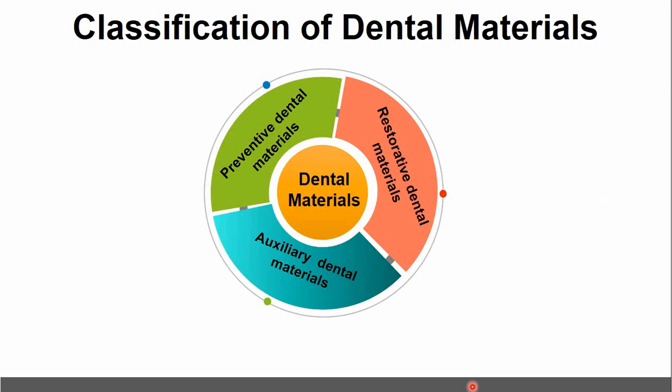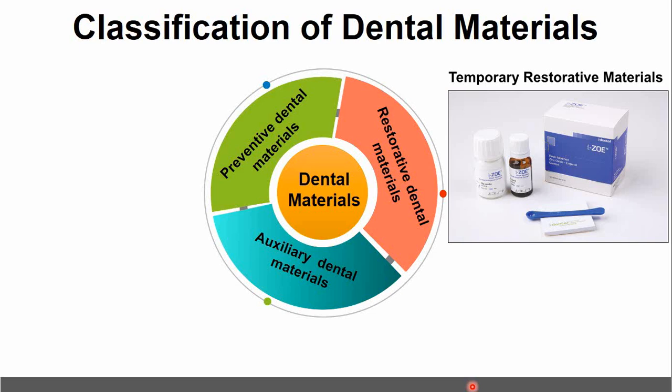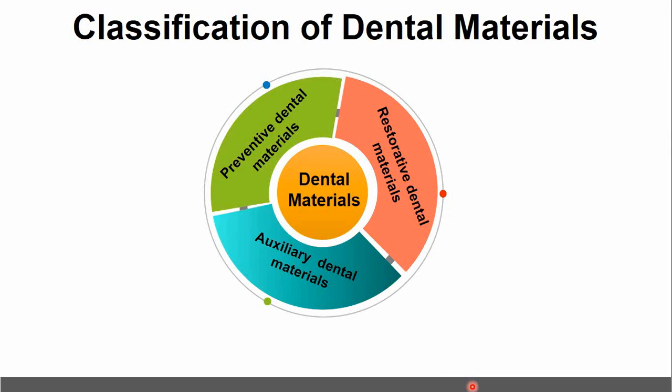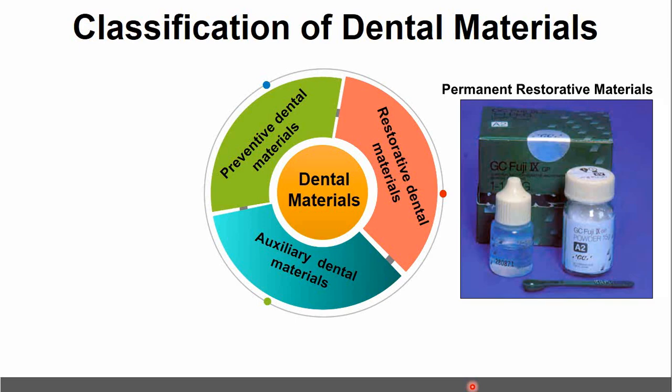Restorative dental materials are further classified into temporary restorative materials — one example being zinc oxide eugenol cement — and permanent restorative materials, which include dental amalgam and glass ionomer cements as a few examples.